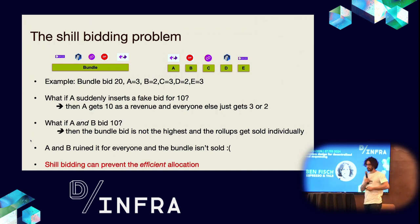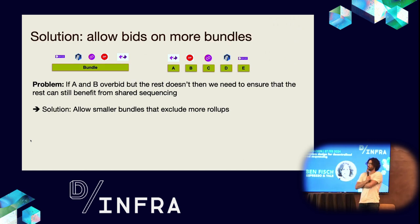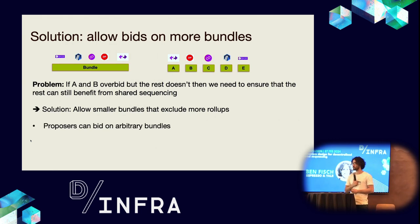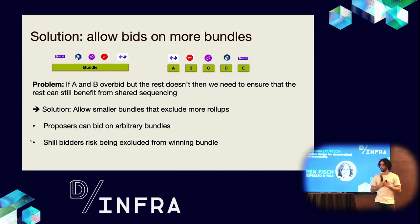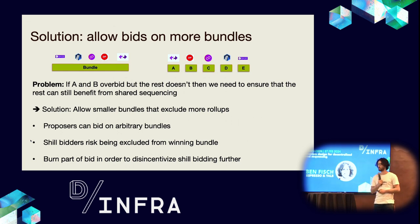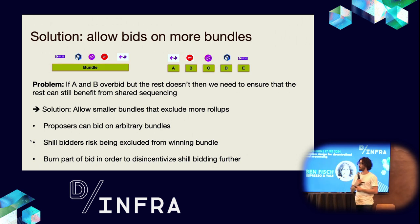Shill bidding can prevent the most economically efficient allocation. The solution is to allow bids on more bundles — not just the entire bundle and individual rollups. If we allow bids to be submitted for any combination of rollups, we avoid this problem. When you shill bid, you risk being excluded from the winning bundle. A nice property is that if you don't shill bid, you're guaranteed to be included in the bundle. We can also burn part of the bid to further disincentivize shill bidding — not only would you exclude yourself from the bundle surplus, but you'd also pay a fraction of your revenue to shill bid.